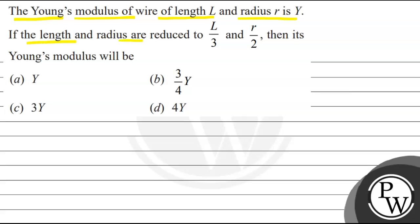If the length and radius are reduced to L by 3 and R by 2, then its Young's modulus will be.